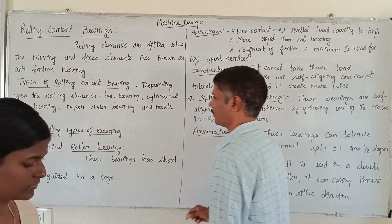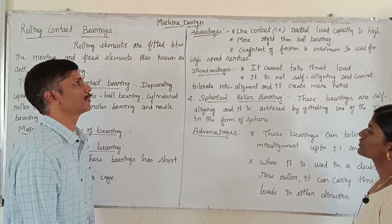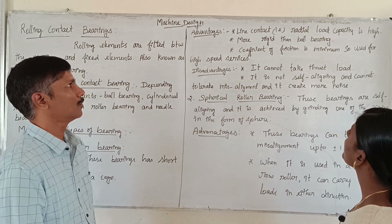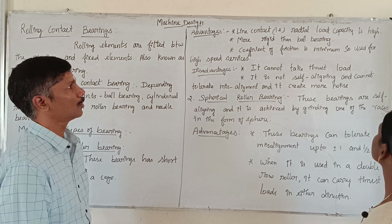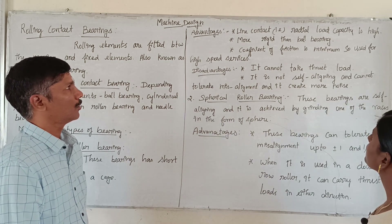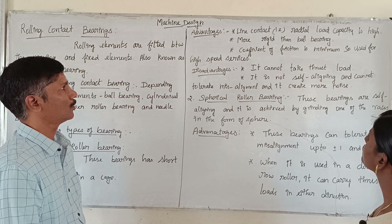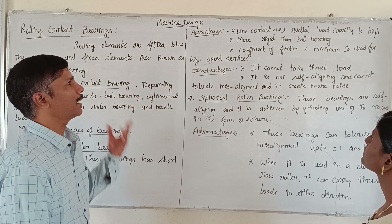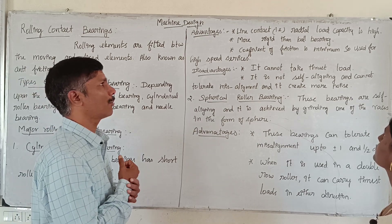Advantages of cylindrical roller bearing: Line contact means radial load capacity is high. It is more rigid than ball bearing. Coefficient of friction is minimum, so it is used for high speed services.